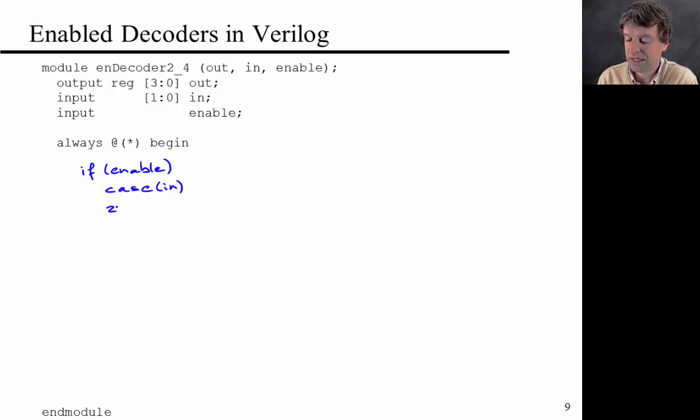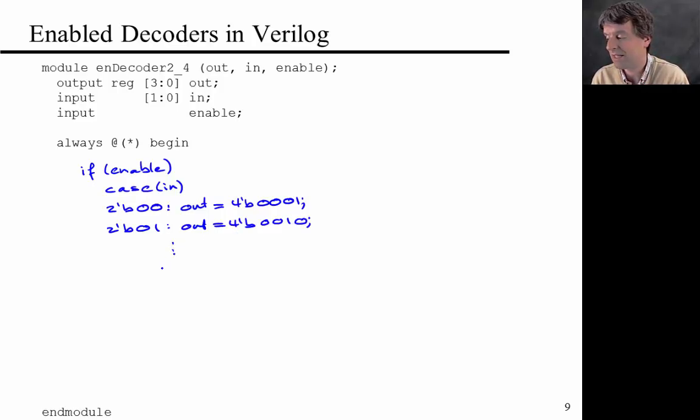I'm going to say the first case is that the input is a 2-bit binary number 0, 0. In that case, the colon, out is the 4-bit binary 0, 0, 0, 1. Semicolon. And then of course, the next case would be 0, 1. In that case, out is 4'd, 0, 0, 1, 0, et cetera. End case.